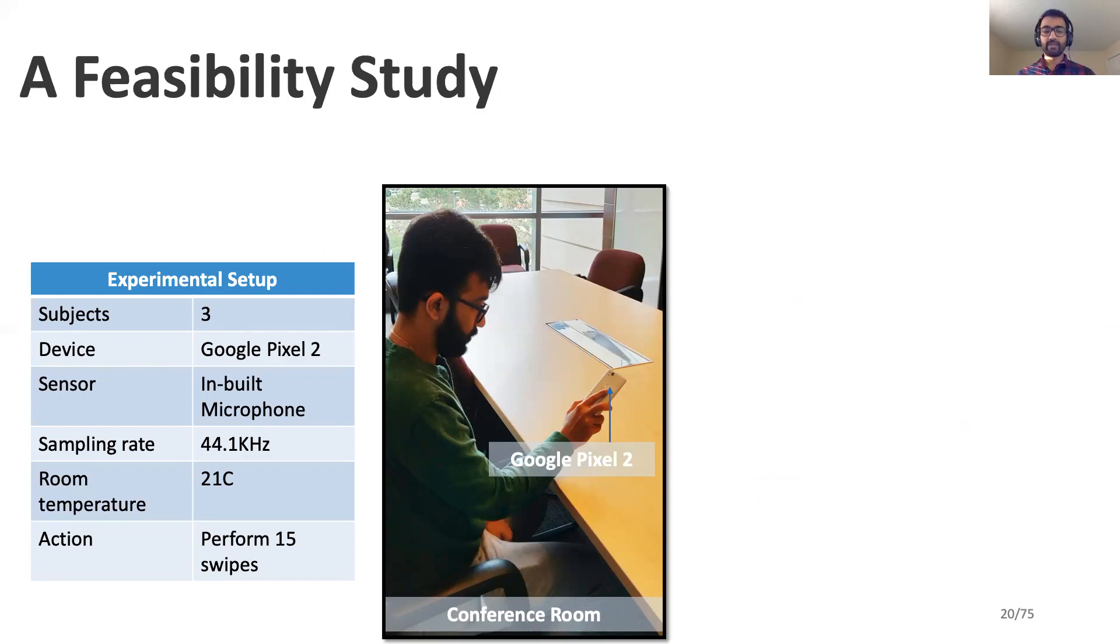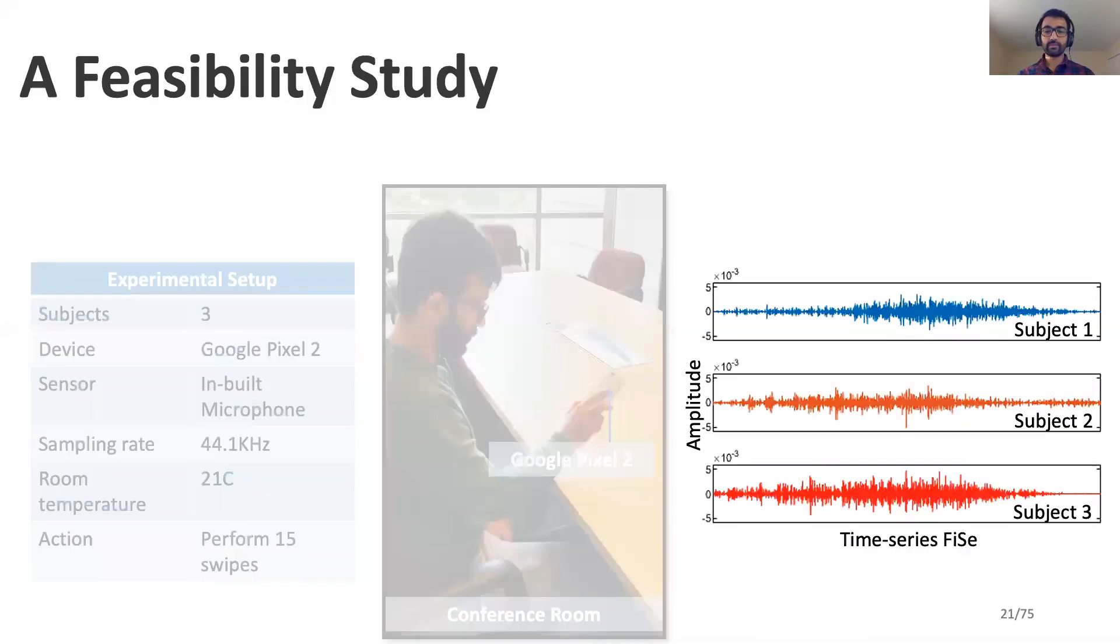To prove the feasibility of FICE in biometric applications, we recruit three subjects. We ask each subject to perform swipe action on the back of the Google Pixel 2 smartphone and use the inbuilt microphone in the device to record the FICE signals. The time series representation of different FICE signals recorded vary among the subjects.